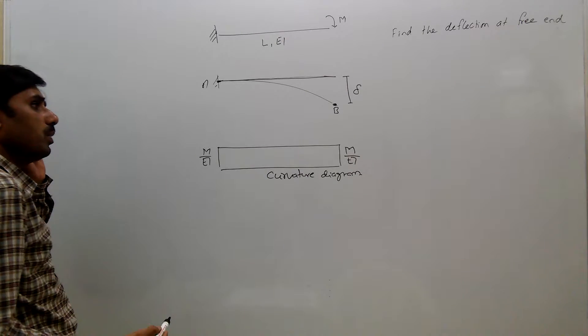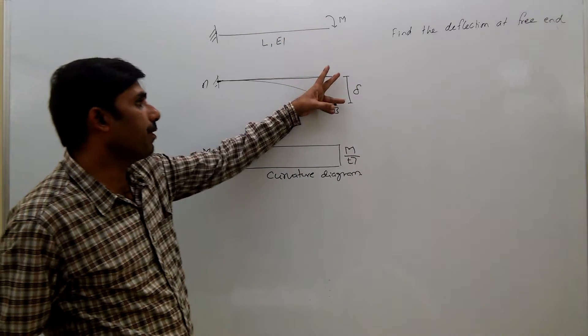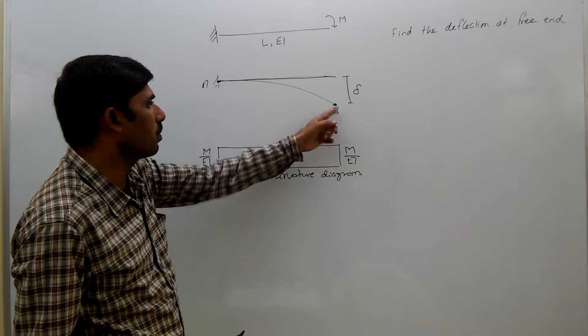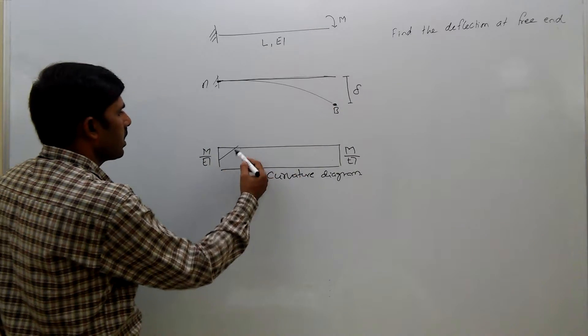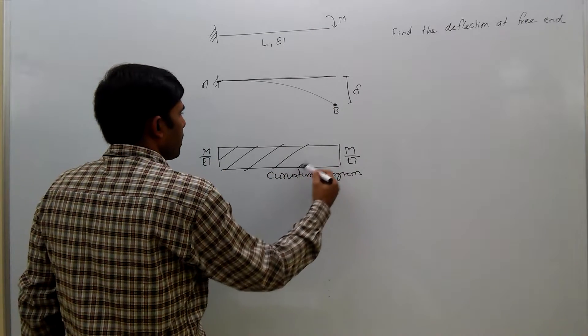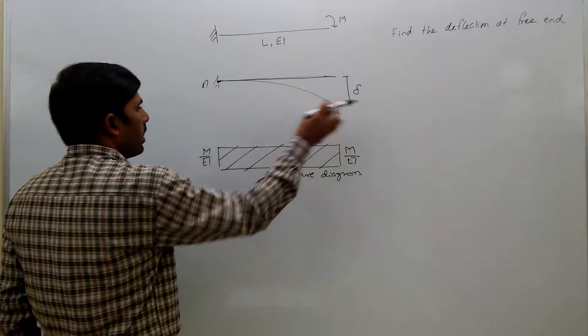Now, we need to find the deflection, this delta. That is nothing but the moment of area about B for this area. This area must be between A and B.